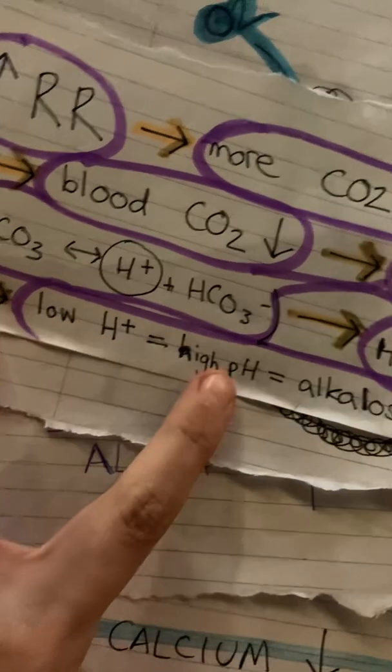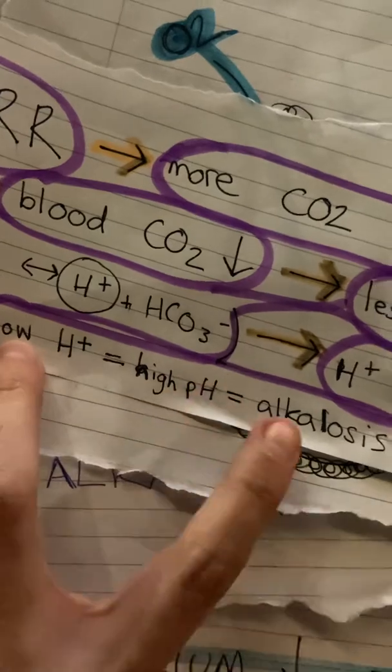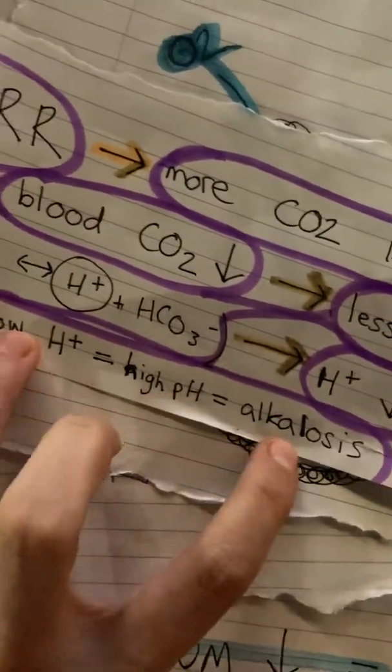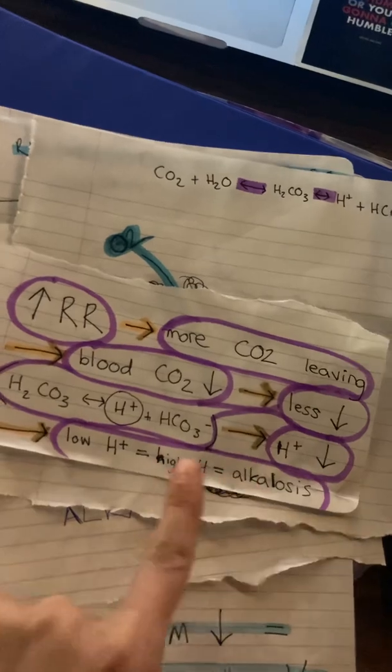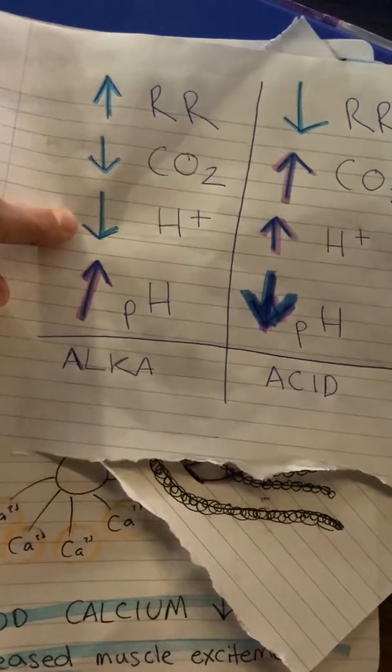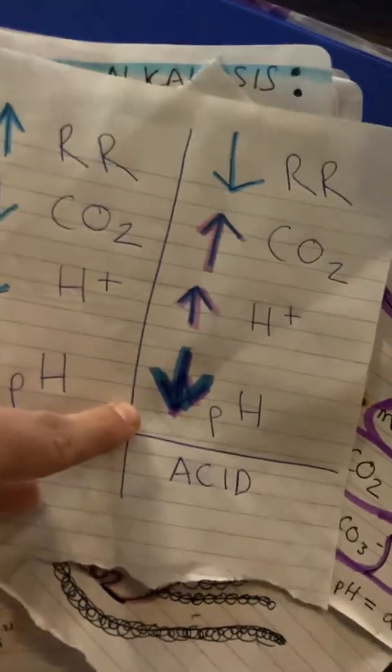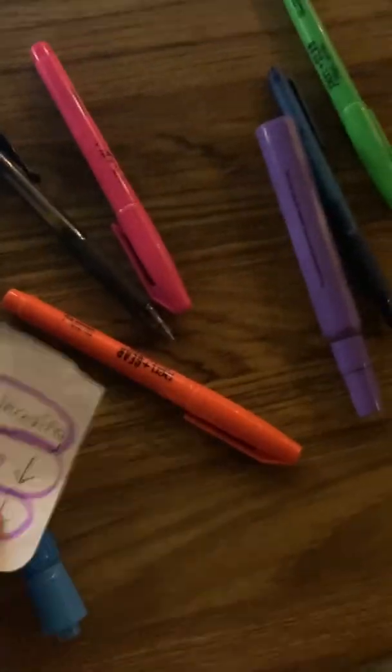When hydrogen ions are low — this is a chemistry thing — low hydrogen equals high power of hydrogen, meaning high pH, which equals alkalosis. High pH or low concentration of hydrogen ions is the same thing as alkalosis. So: high respiratory rate → low CO2 → low hydrogen → high pH = alkalosis. Vice versa: low respiratory rate → high CO2 → high hydrogen → low pH = acidosis.